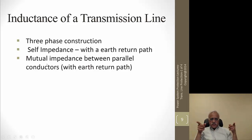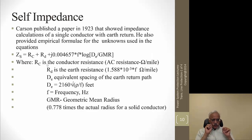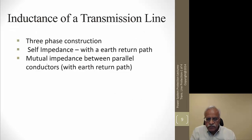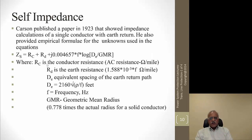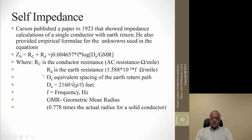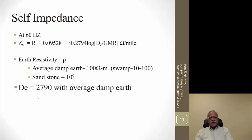The self impedance formula was first developed by Carson, published in a paper in 1923. The self impedance equation involves dE, the average distance between each conductor and the return path. For a single conductor, it is dE divided by the geometric mean radius. Depending on soil type, earth resistivity varies — approximately 100 ohm-meters for normal soil, 10 to 100 for swamp. For average earth, dE is approximately 2790. These values are available from manufacturers or reference books for various soil types.